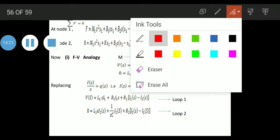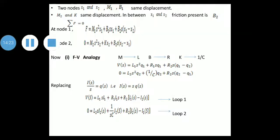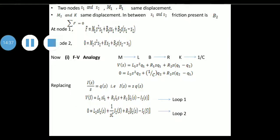Replacing Q(S) using I(S) = S·Q(S), we substitute in both equations. Equation 1 becomes: V(S) = L1 S I1 + R1 I1 + R2(I1 − I2). Equation 2 becomes: 0 = L2 S I2 + (1/(SC)) I2 + R2(I2 − I1). These two equations represent loop 1 and loop 2.